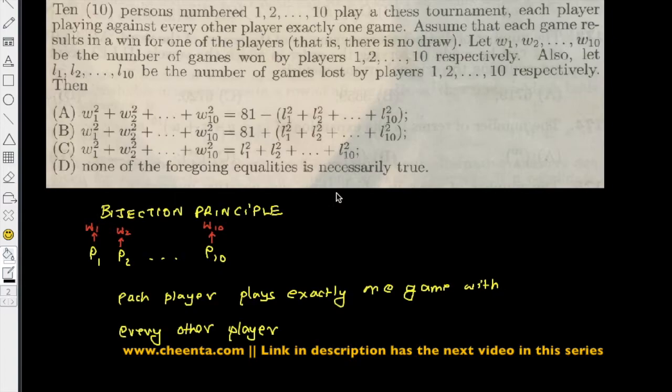Similarly, for player 1 the number of losses is l1, the number of losses for player 2 is l2, and for player 10 the number of losses is l10.